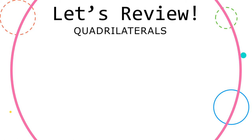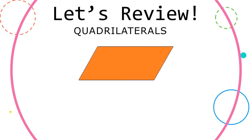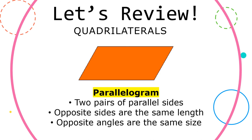What kinds of quadrilaterals do you remember? Let's go through some of the more common ones to review what we learned today. It's a parallelogram. Parallelograms have two pairs of parallel sides. The opposite sides are the same length, and the opposite angles are also the same size.